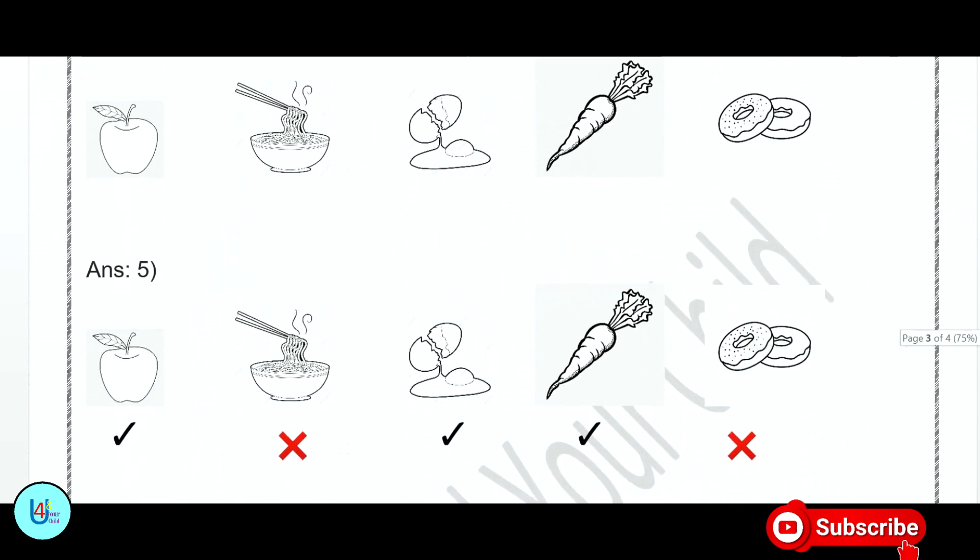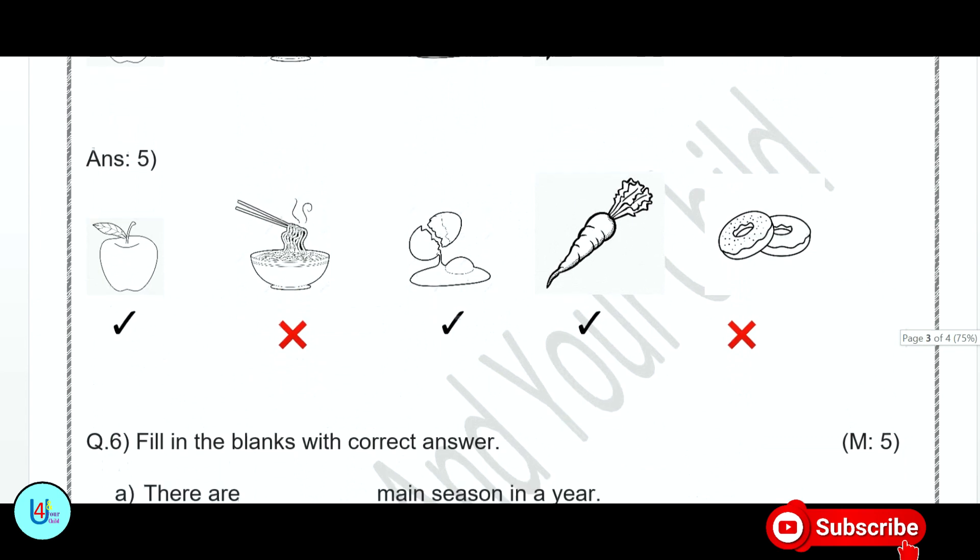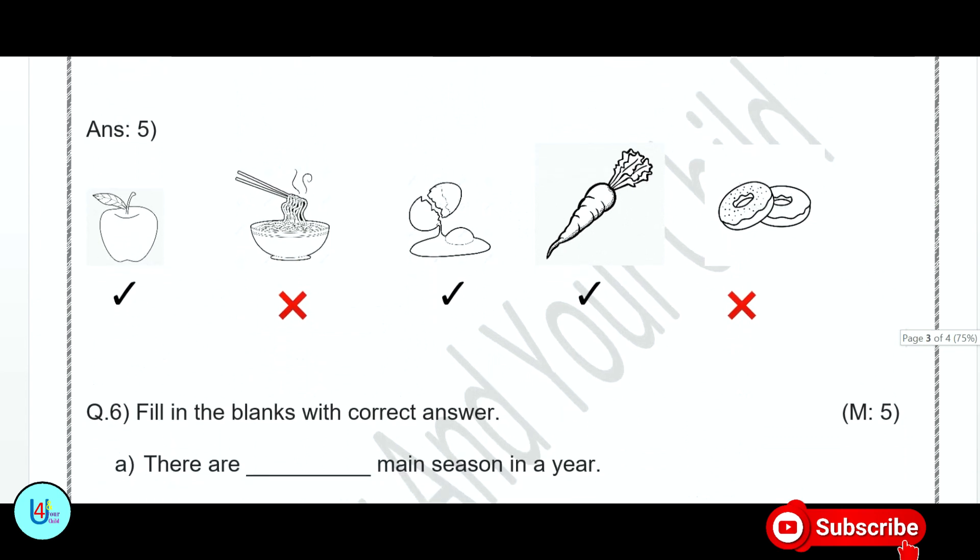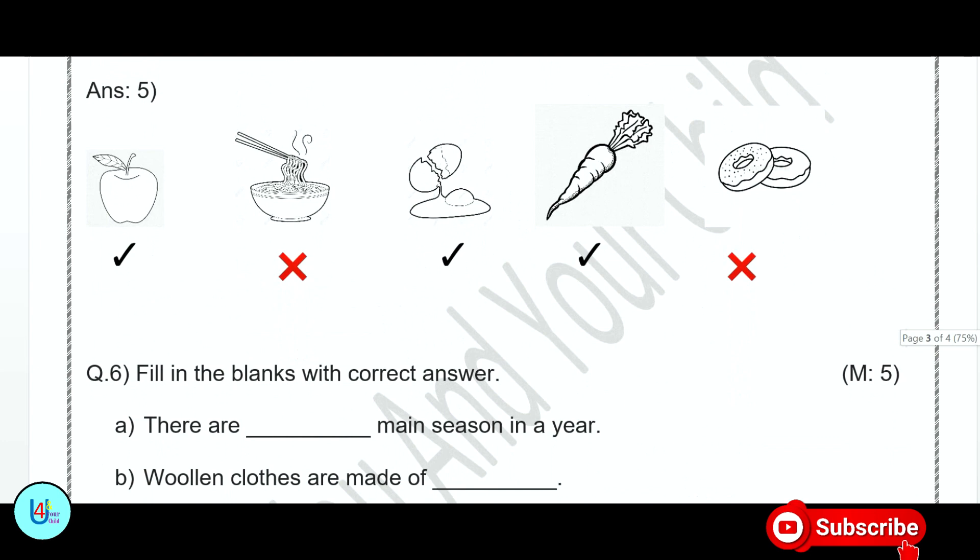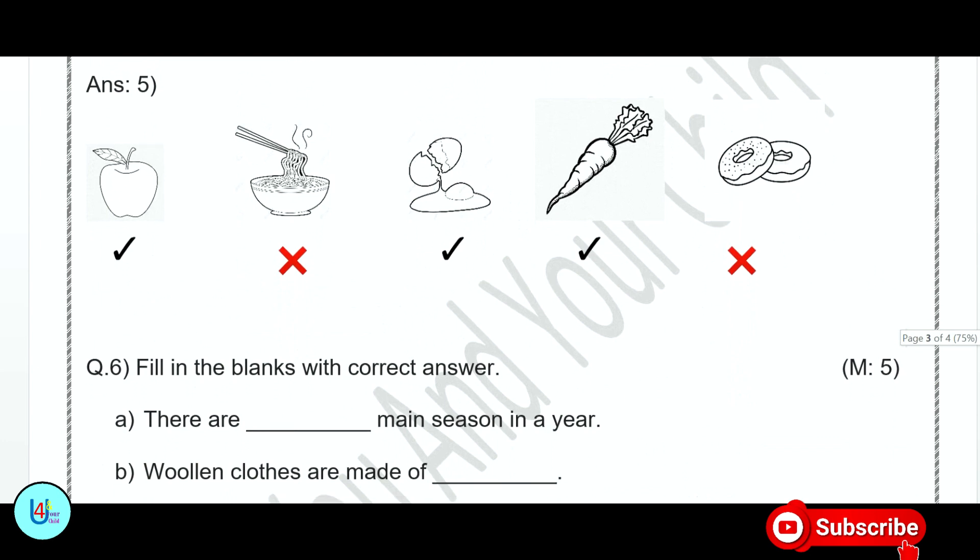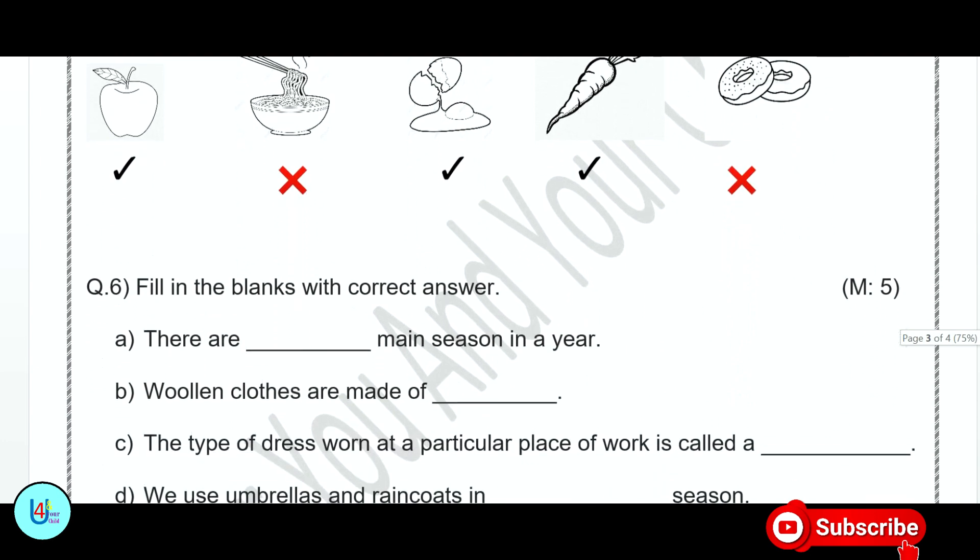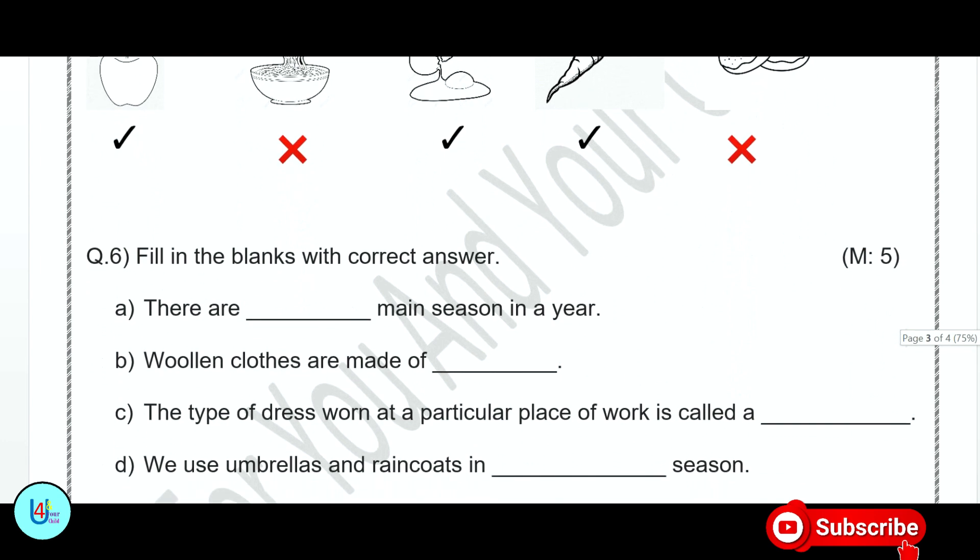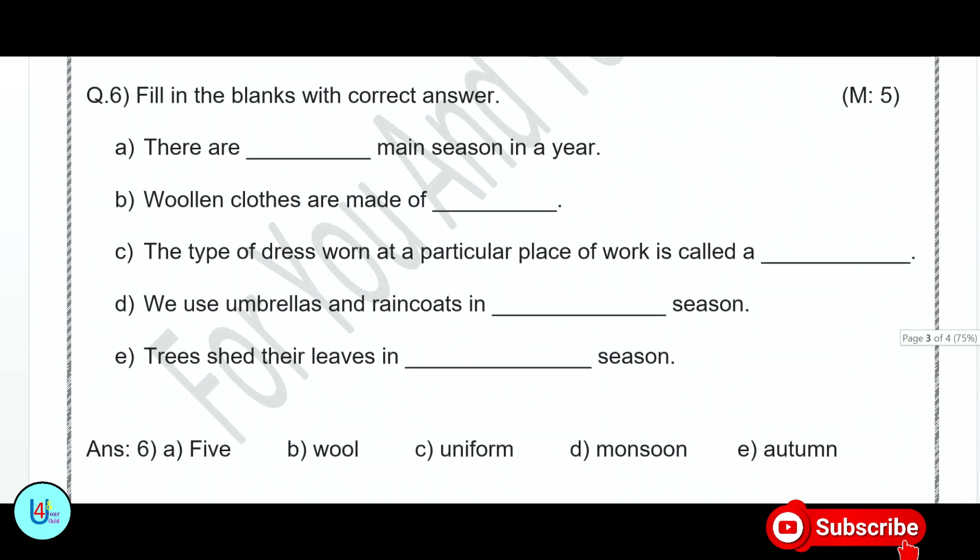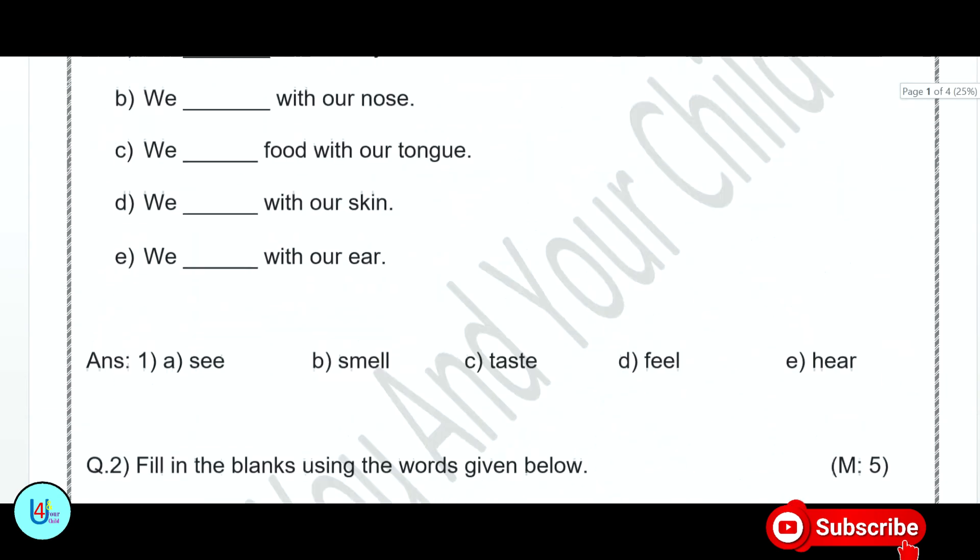Question number 6: Fill in the blanks with the correct answer. There are blank main seasons in a year. There are five main seasons in a year. Woolen clothes are made of wool. The type of dress worn at a particular place of work is called a uniform. We use umbrellas and raincoats in monsoon season. Trees shed their leaves in autumn season. If you give a small test paper to a child to solve, their practice will be good and their confidence will be great. They will perform very well in the final exam.